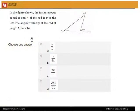Okay, so you asked you have a doubt in this question. The figure shows the instantaneous speed of the end A of this rod is V to the left, and we have to find out the angular velocity of the rod given that the length is L.